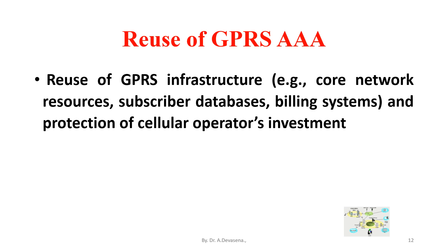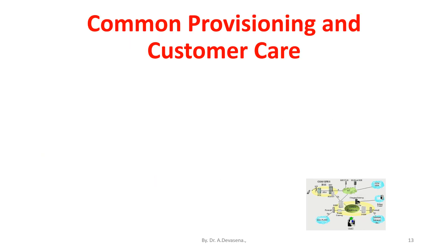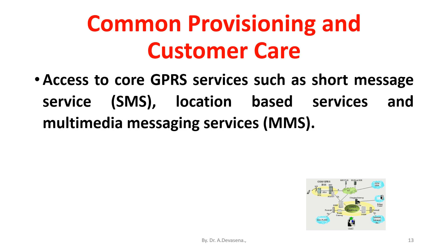Protection of cellular operators' investment, support of lawful interception for WLAN subscribers, and increased access to security — since GPRS authentication and ciphering can be used on top of WLAN ciphering. Common provisioning and customer care, and access to core GPRS services such as Short Message Service (SMS), location-based services, and Multimedia Messaging Services are available.